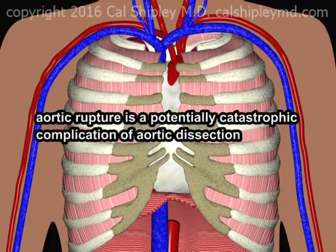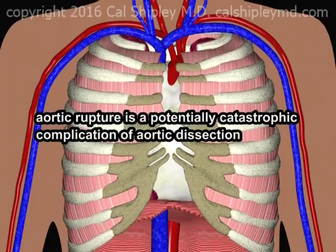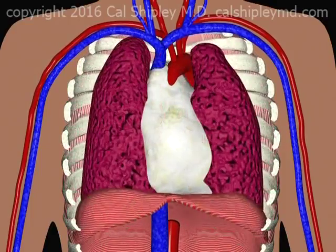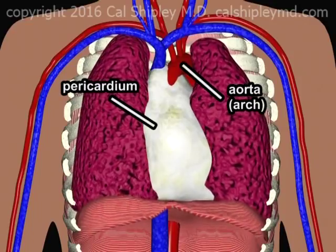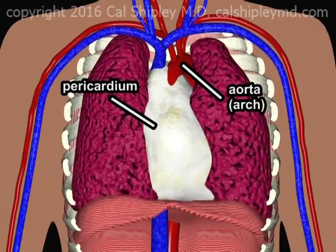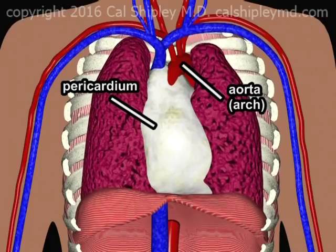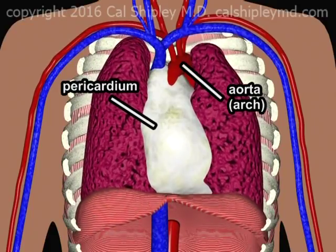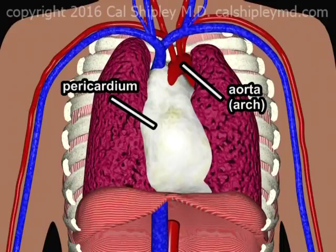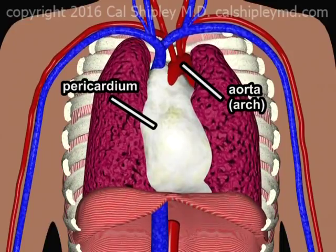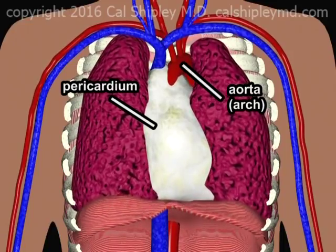Rupture of the aorta is a potentially catastrophic complication of aortic dissection. Any rupture which occurs in the aorta outside the pericardium may lead to acute hemothorax. For the purposes of this presentation, I'm going to assume that the aortic rupture occurs in the area of the aortic arch.